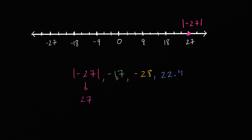Then we have negative 17. Each hash mark here is 3. So this is negative 9, negative 12, negative 15. So negative 17 is going to be right around there. That is negative 17.